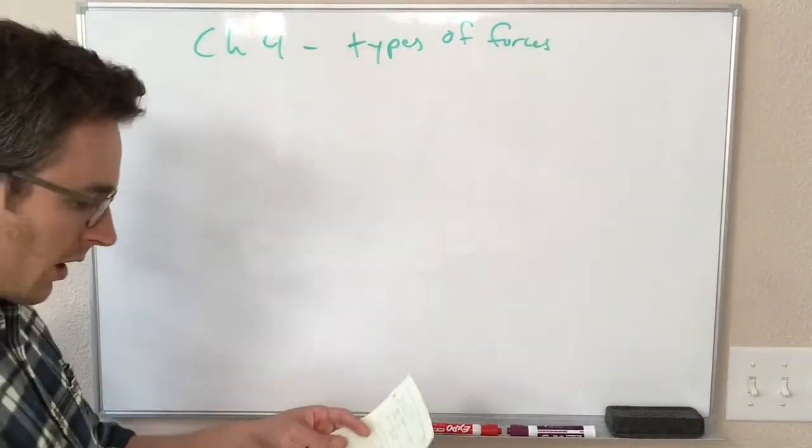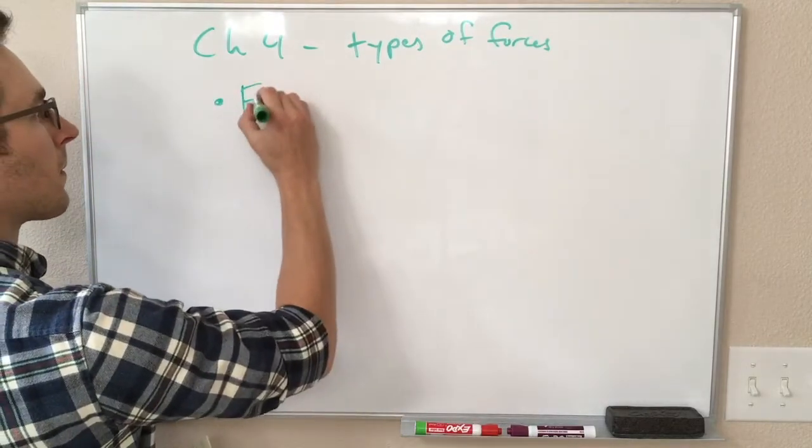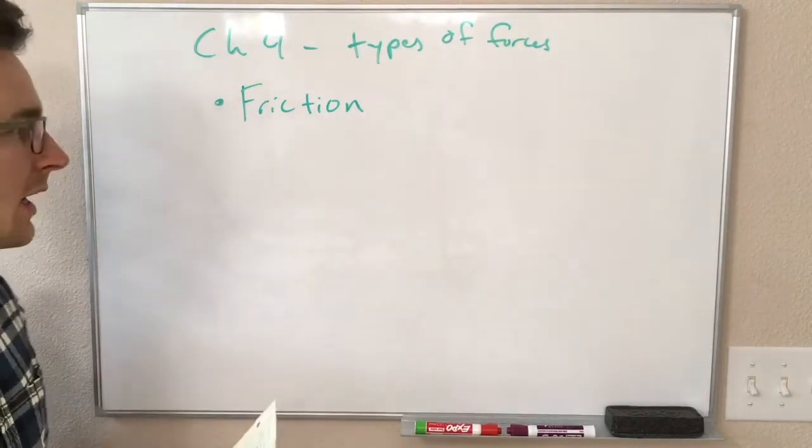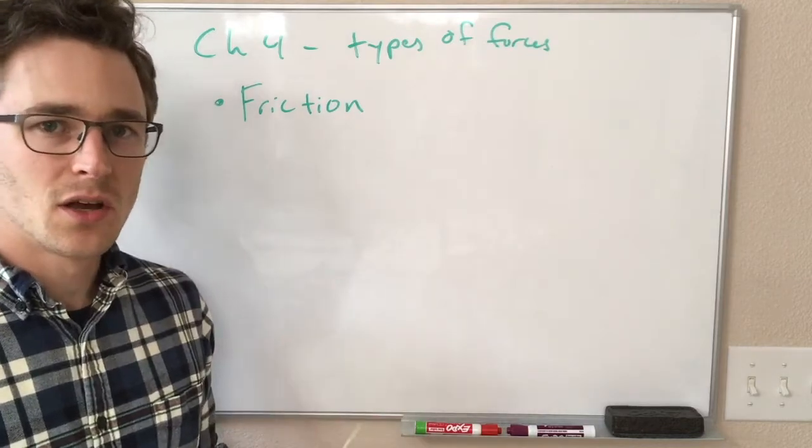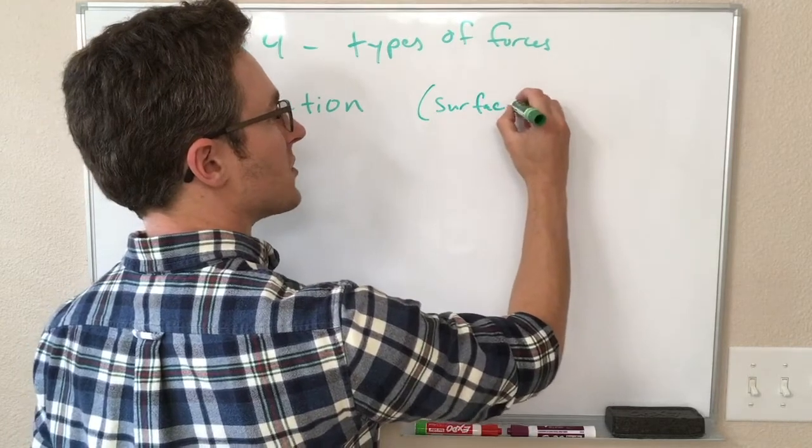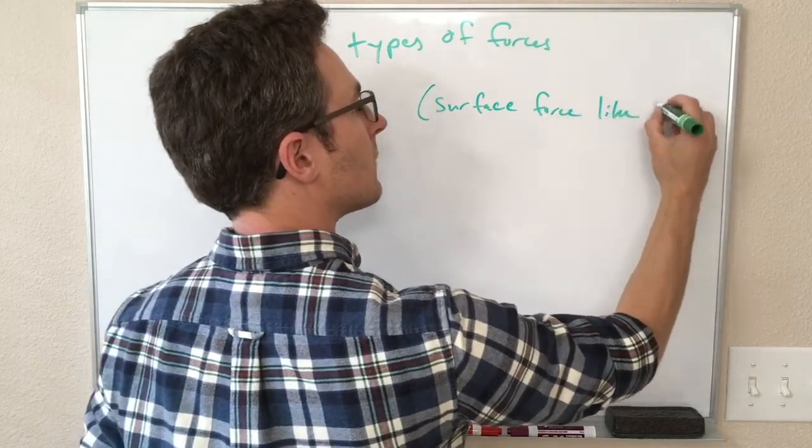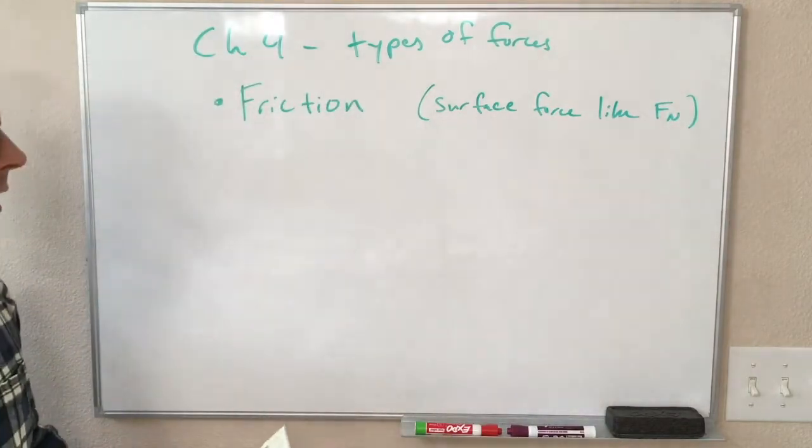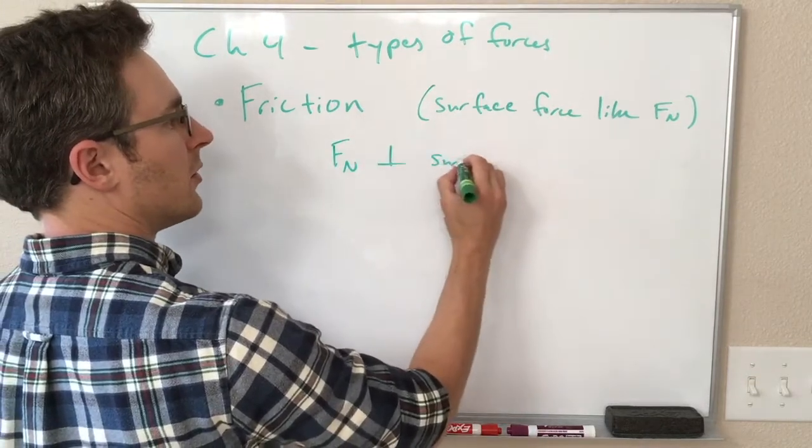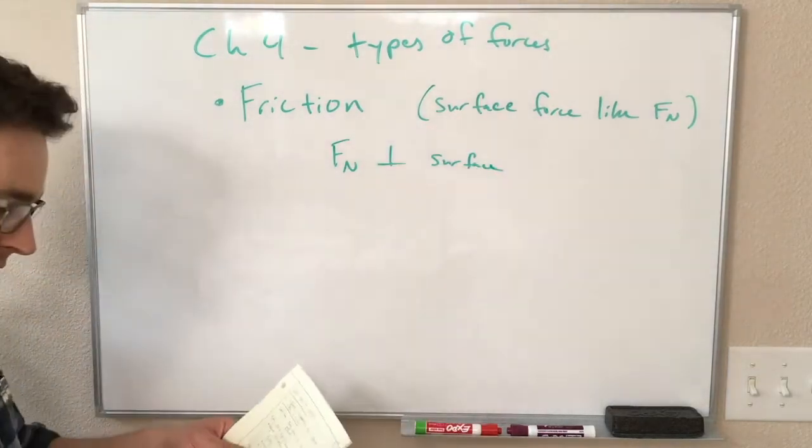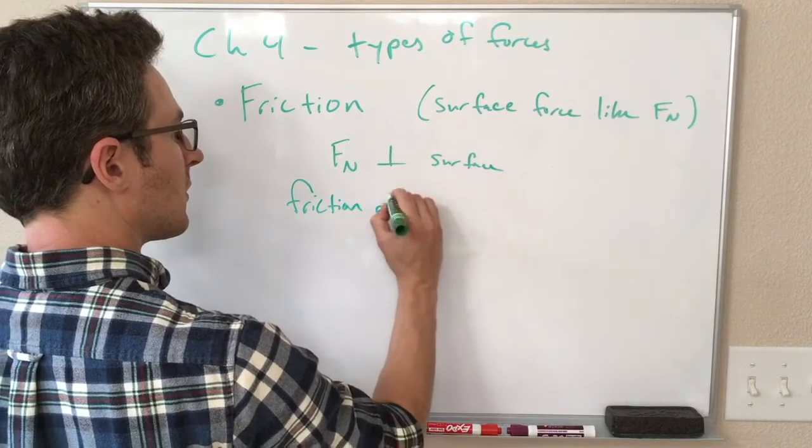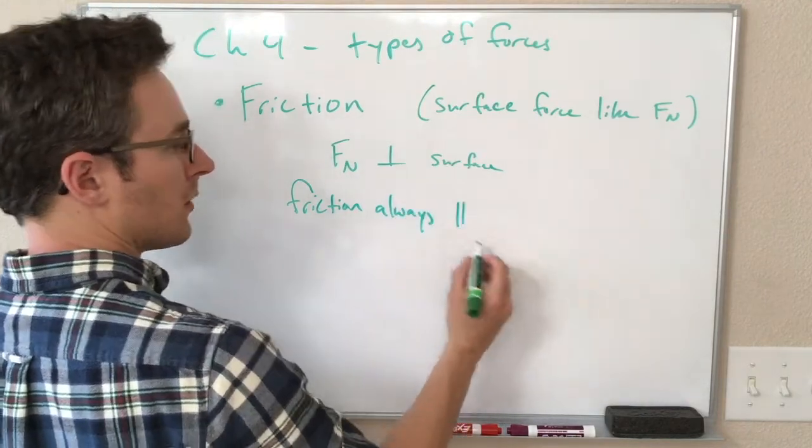So that's the normal force. The next force we have is friction. And friction and the normal force go hand in hand. We also have friction when an object is at a surface. So friction is another surface force. The difference is our normal force was perpendicular to the surface. Our friction is not. Our friction is always parallel to the surface.